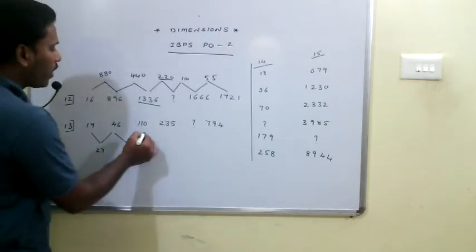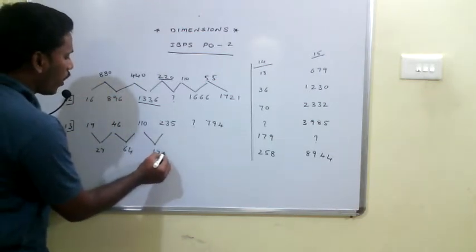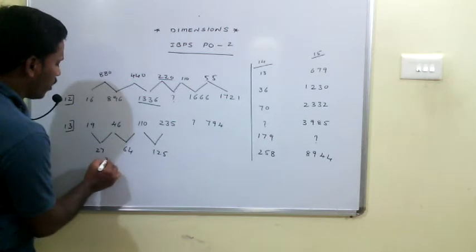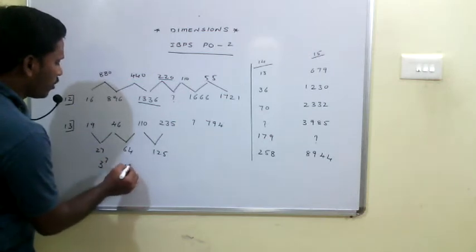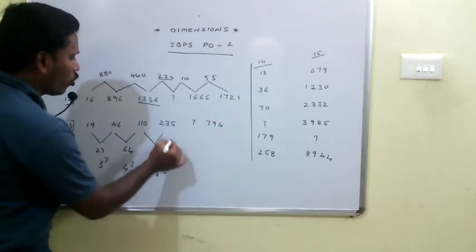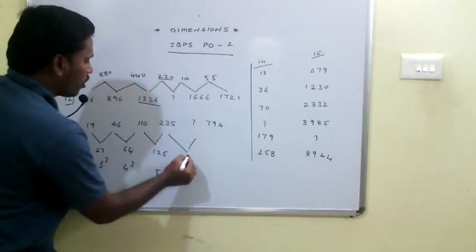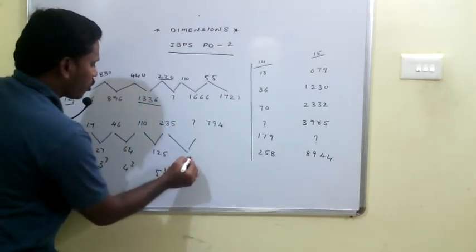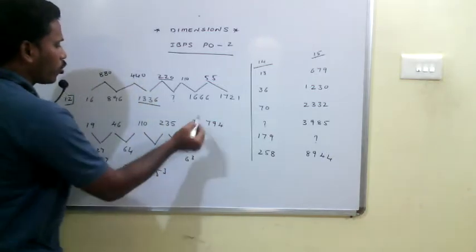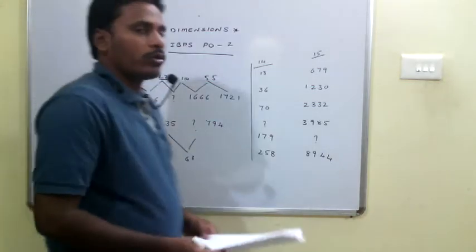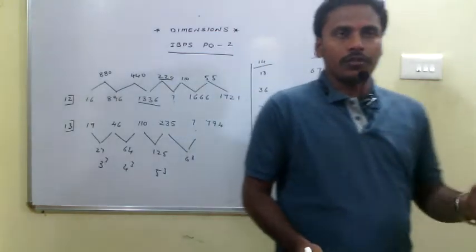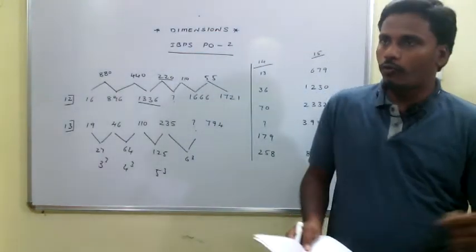The difference between the next two values is 64, and the difference between those two values is 125. This is 3 cube, this is 4 cube, this is 5 cube. So surely this difference will be 6 cube, which is 216. So your next term of the series is 235 plus 216.